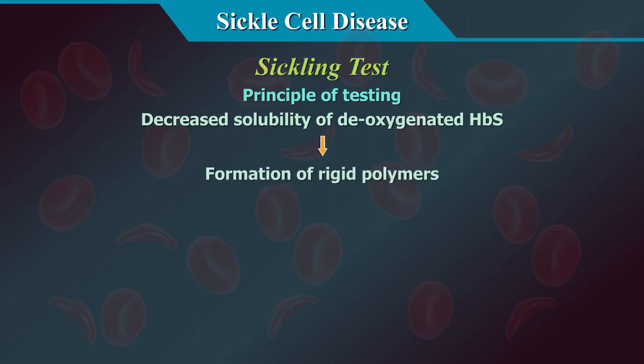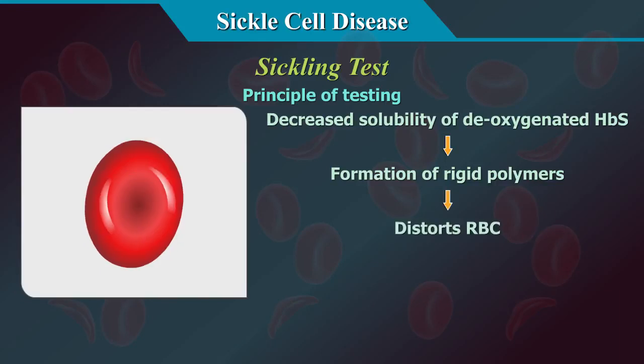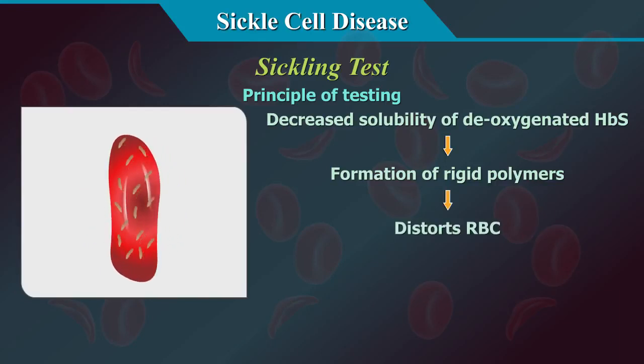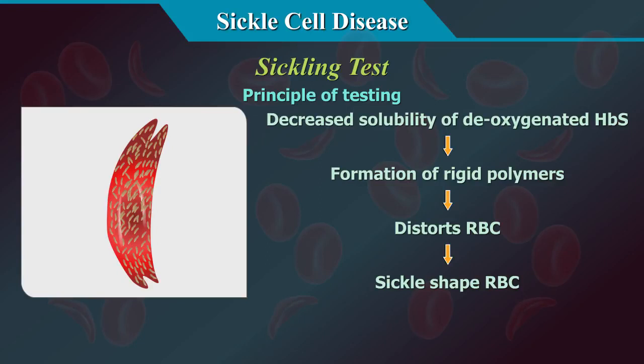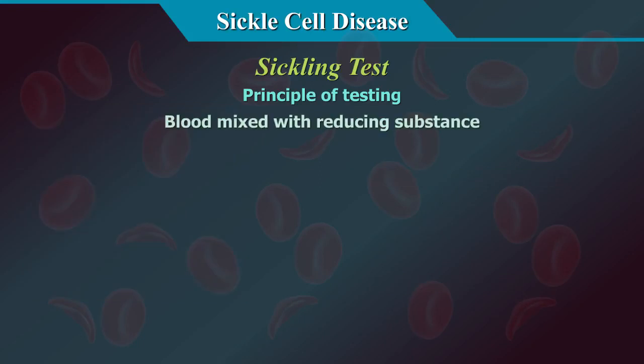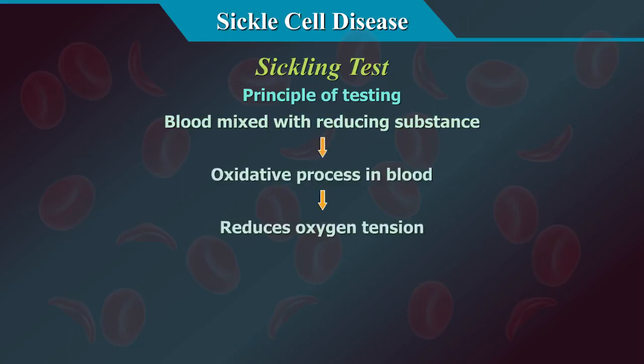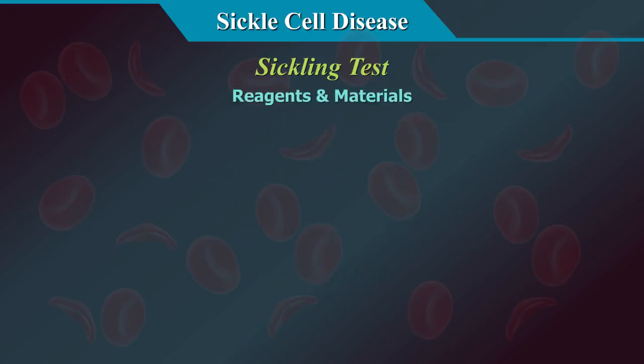The principle of the sickling test: the decreased solubility of deoxygenated haemoglobin S results in the formation of rigid polymers which distort the red cells to the characteristic sickle shape. Classically, these red cells appear as a thin crescent with two pointed ends and they lack central pallor. In the sickling test, blood is mixed with a reducing substance which reduces oxygen tension due to oxidative processes in the blood cells, inducing the sickling process of HBS in these RBCs.